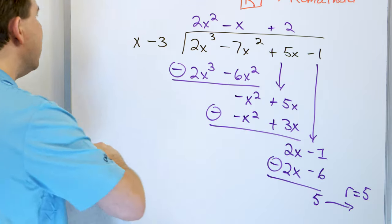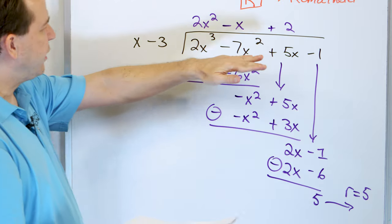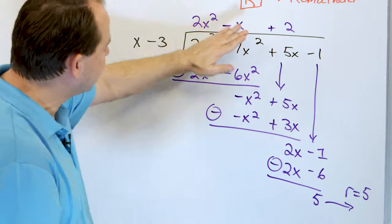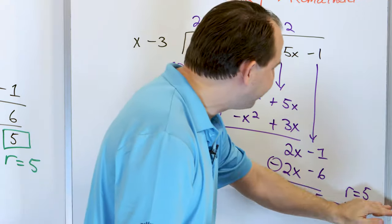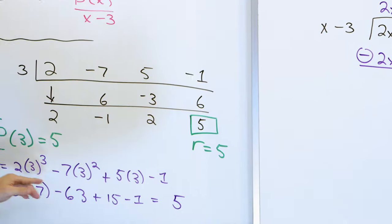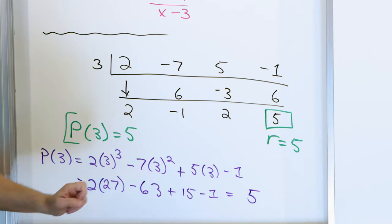I just wanted to do it again so you can see I'm not doing any funny business with the synthetic division. I'm taking the polynomial, dividing by x minus 3, and the remainder I'm getting is 5. We've already shown that when you plug in the value of 3, you also get 5.